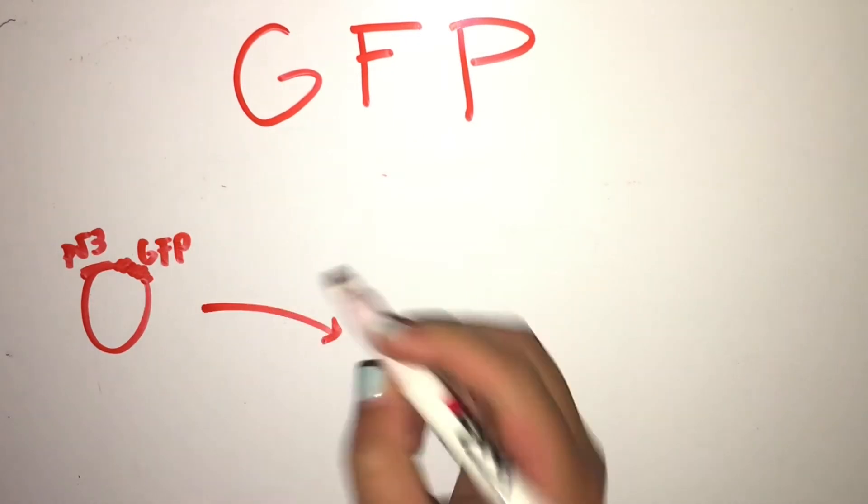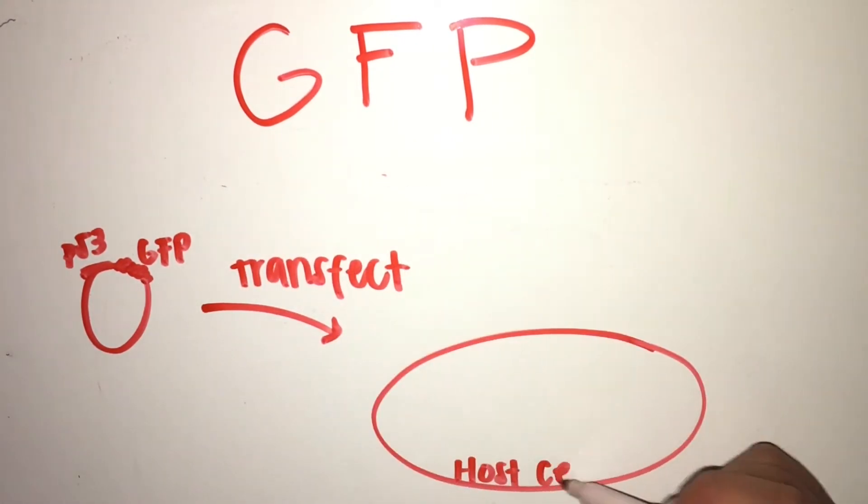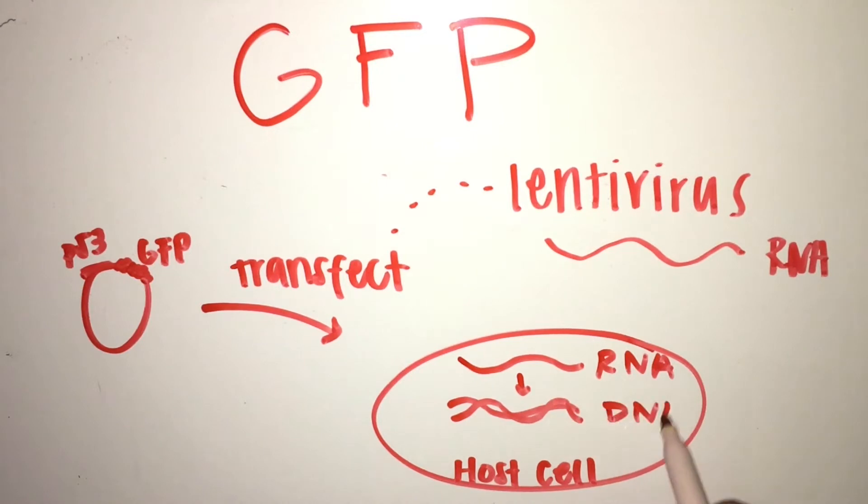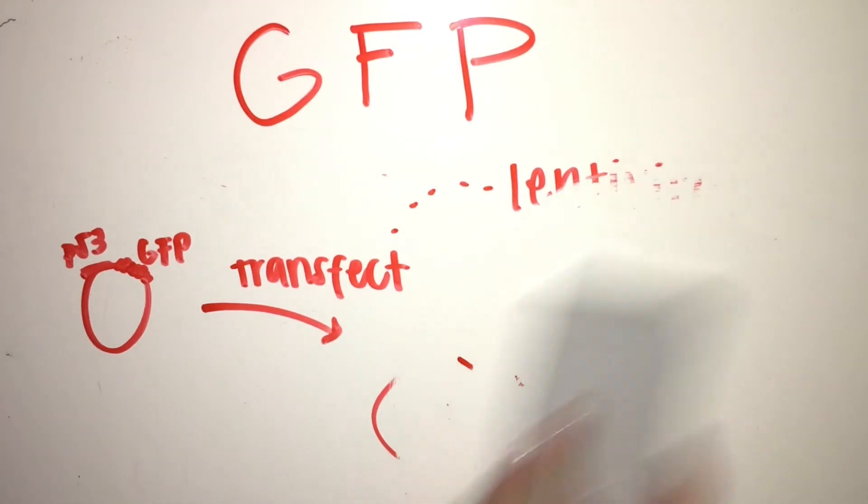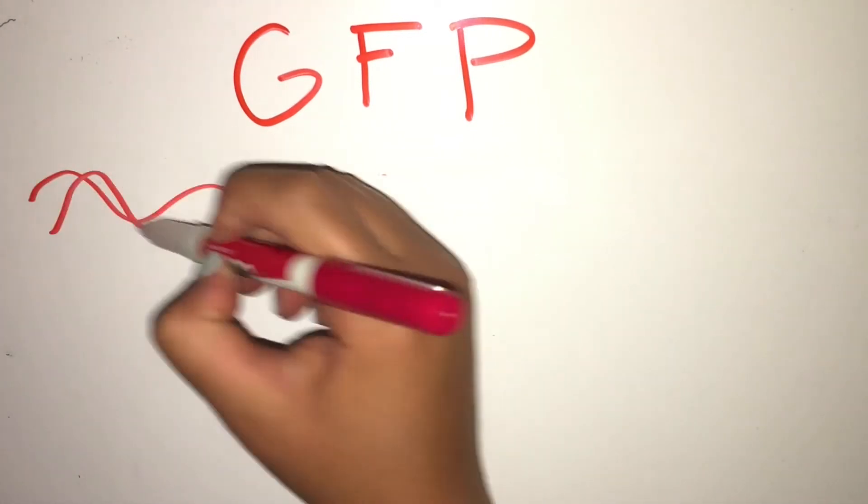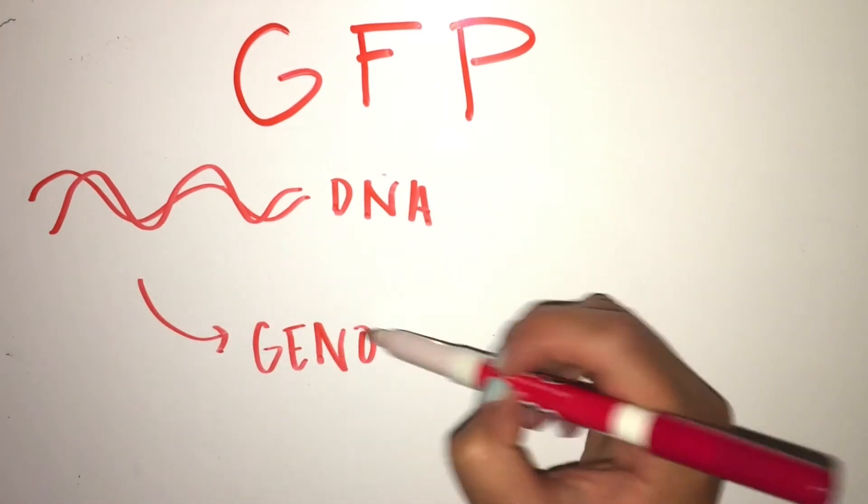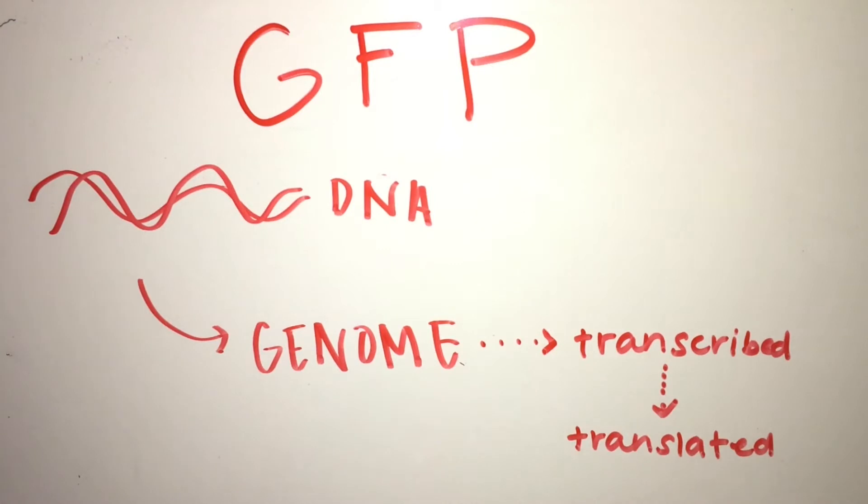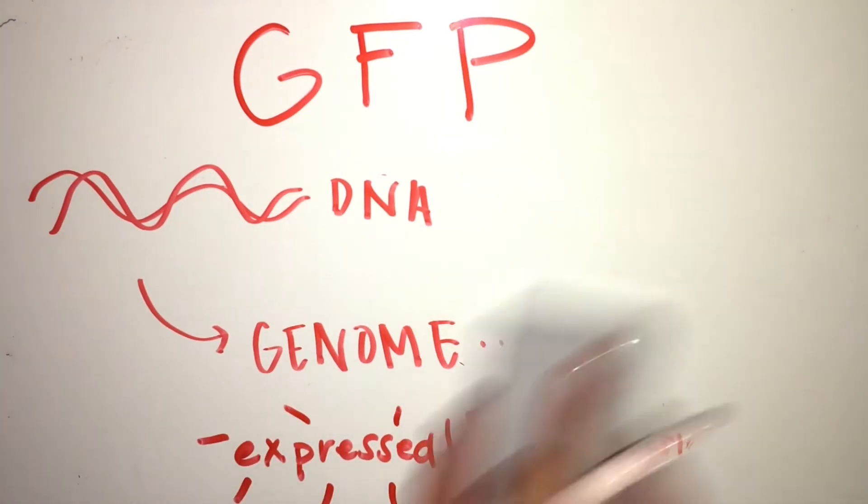Now, we can take our plasmid vector and transfect it into a host cell, using a lentivirus. Once the lentivirus infects the host cell with our RNA transcript of interest, it will be reverse transcribed into DNA. The host cell will incorporate this new DNA into its genome, where it will be transcribed into RNA, translated into protein, and expressed in the host cell, so the gene of interest will glow. We can then see where P53 is located in the cell, as it will fluoresce green under a microscope.